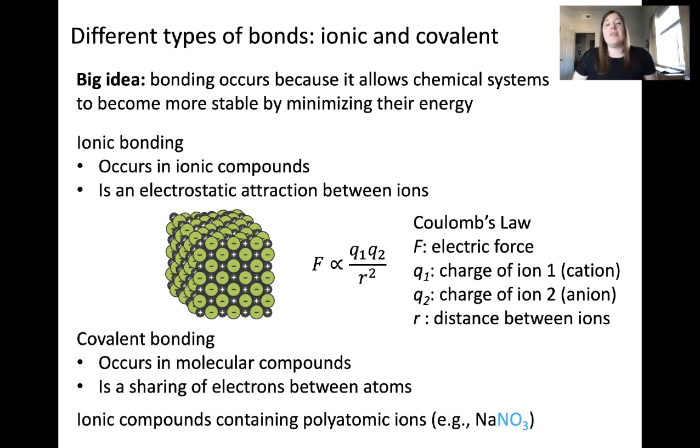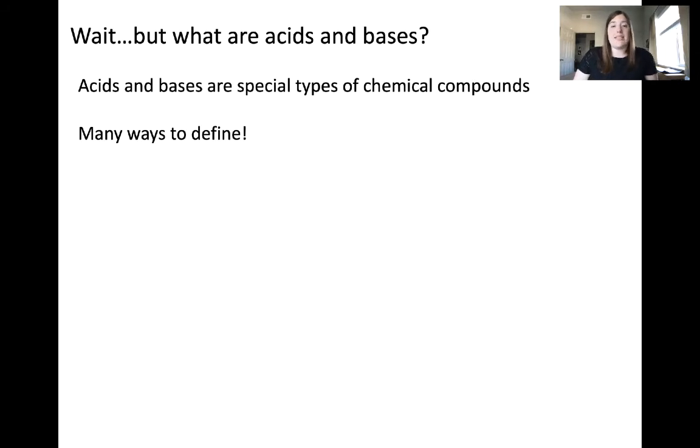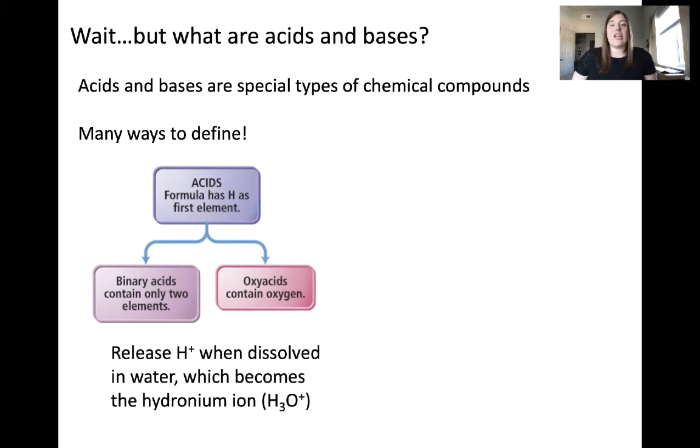Let's move on to our final classification, acids and bases. Acids and bases are special types of chemical compounds. There are many ways to define what an acid and a base is. The definition we'll be using in this class is that acids release H+ when dissolved in water. And H+ goes on to react with water to become the hydronium ion, H3O+.